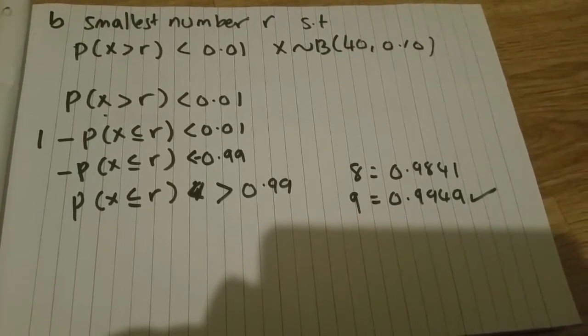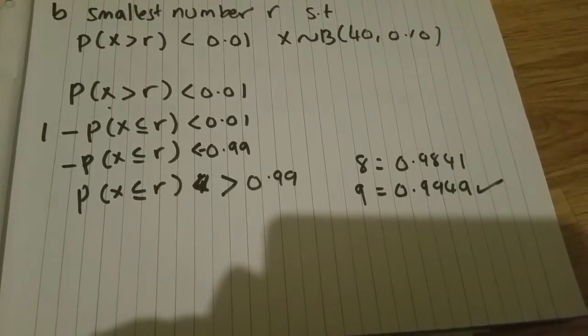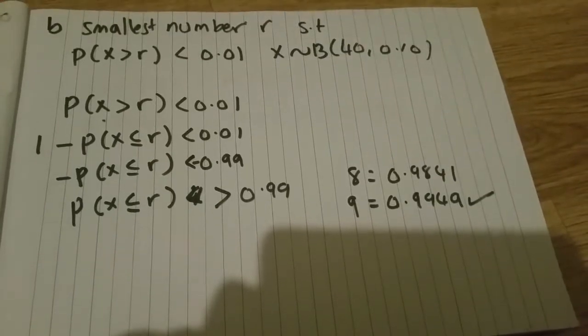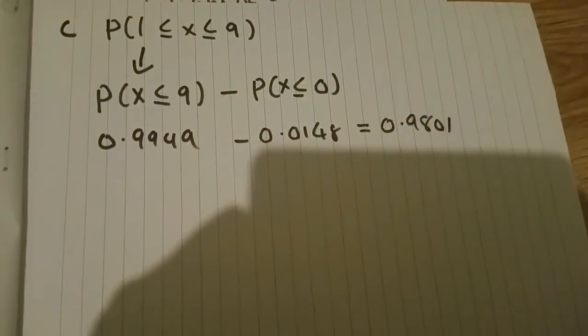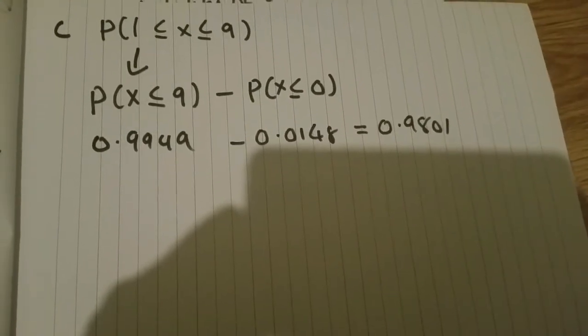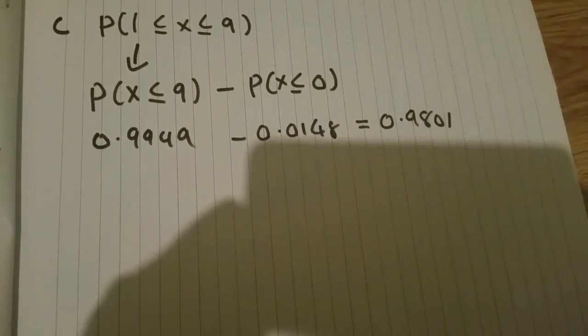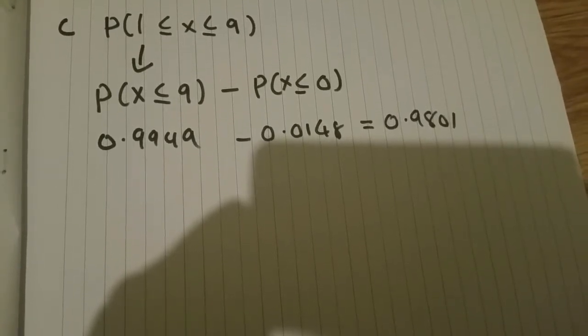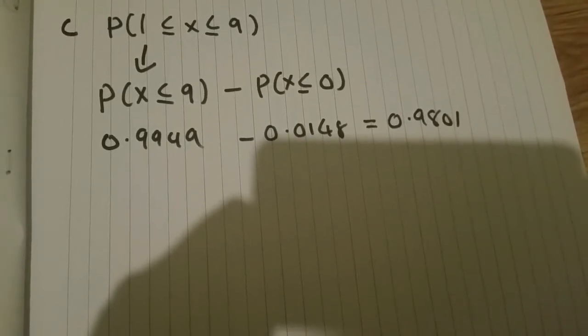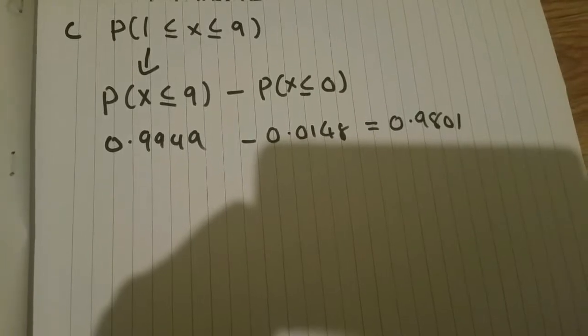So we've got our two numbers now for part c. Part a was 1, so now we're looking for the probability of being between 1 and 9. The first part's easy - it's the probability of being less than or equal to 9. But why is it probability of less than or equal to 0?